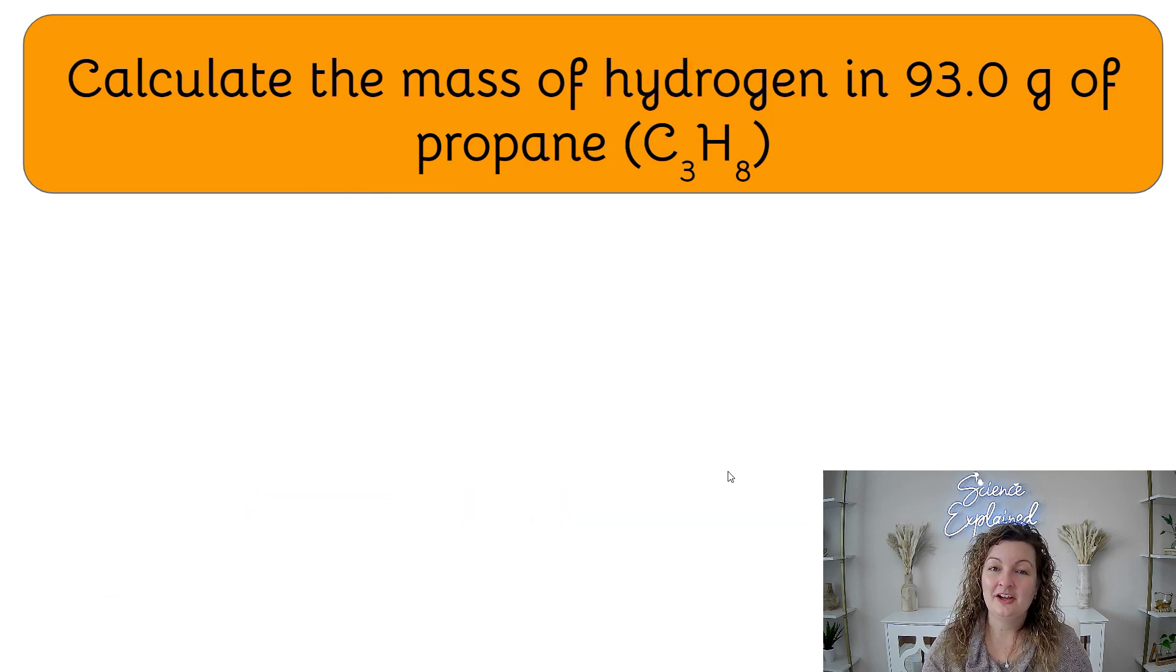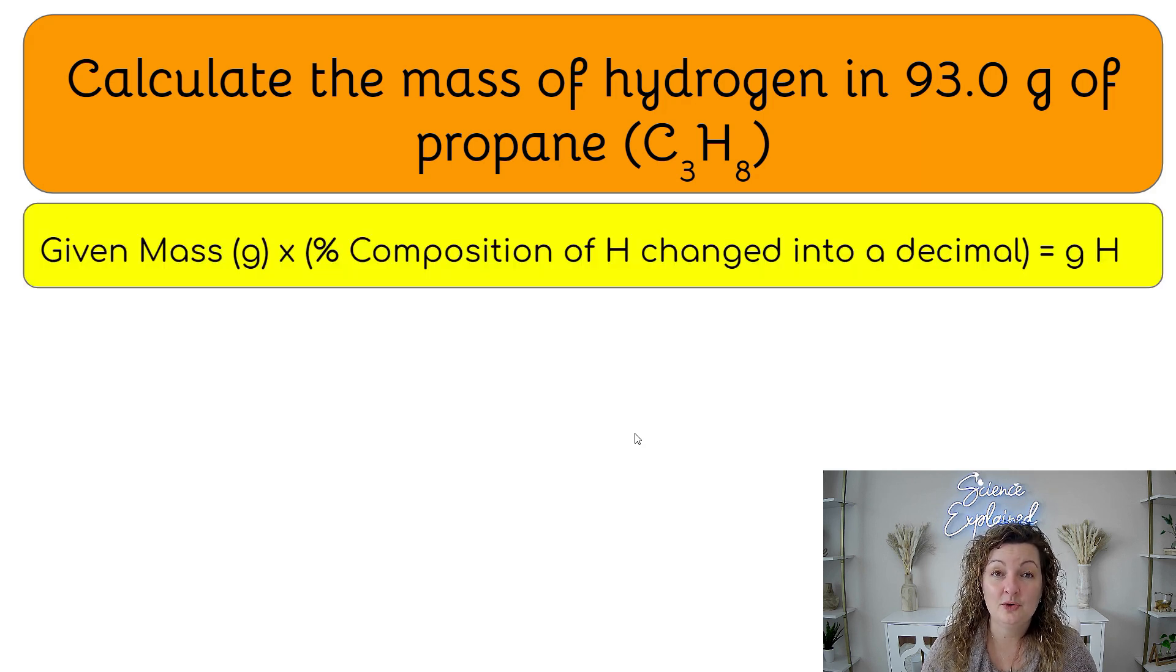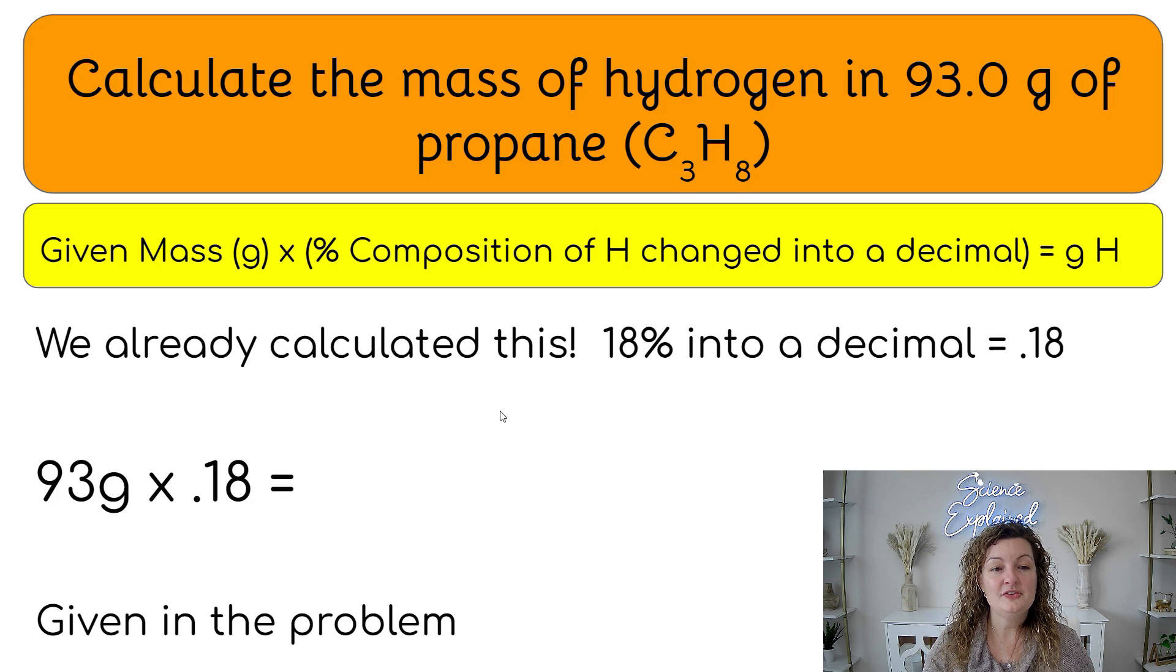Now let's go ahead and try this one. Calculate the mass of hydrogen and 93 grams of propane. So we're doing the exact same thing, but now with hydrogen instead of carbon, right? So we're following the same formula, same method. So let's go ahead and look. We calculated already that hydrogen was 18% composition.